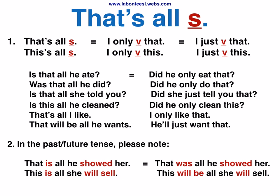Pattern 5: 'That's all' sentence. I only verb THAT. I just verb THAT. This is all sentence. I only verb THIS. I just verb THIS.